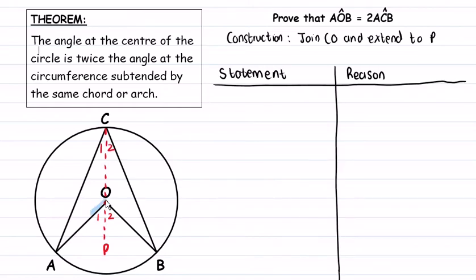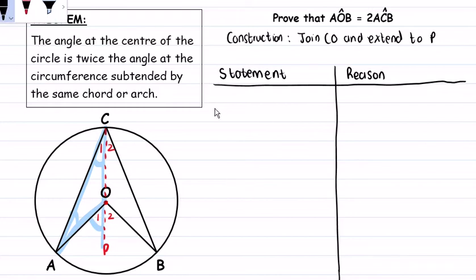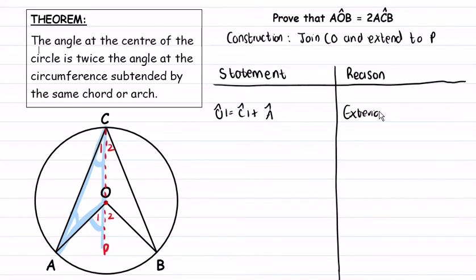In triangle OAC, angle O1 is the exterior angle of this triangle. Remember, the exterior angle of a triangle is equal to the sum of the two opposite interior angles. So angle C1 plus angle A gives us angle O1. Therefore, angle O1 is equal to angle C1 plus angle A, and the reason is the exterior angle of a triangle.